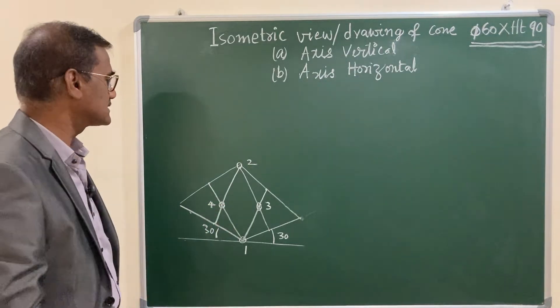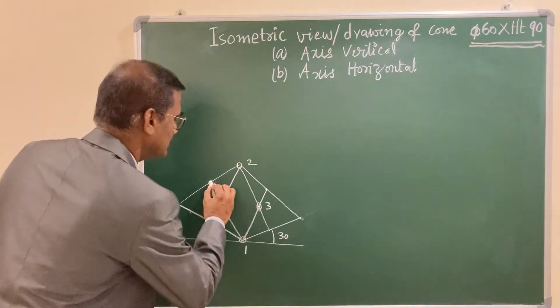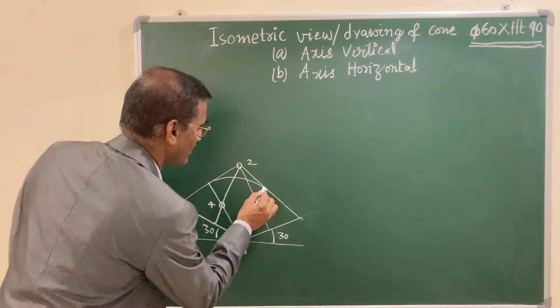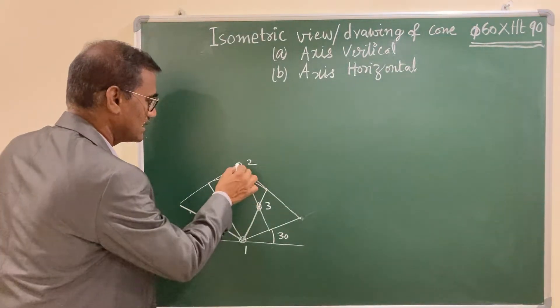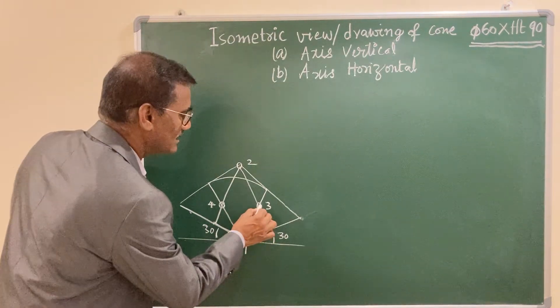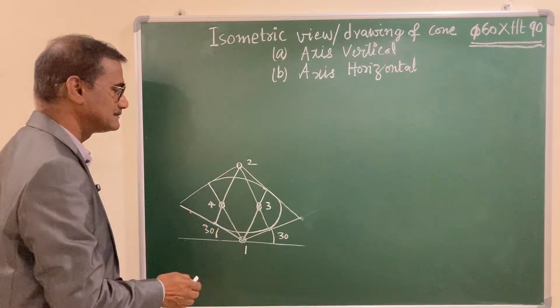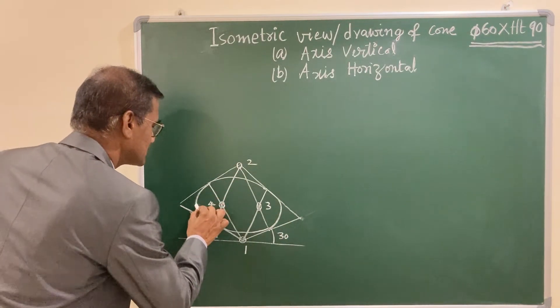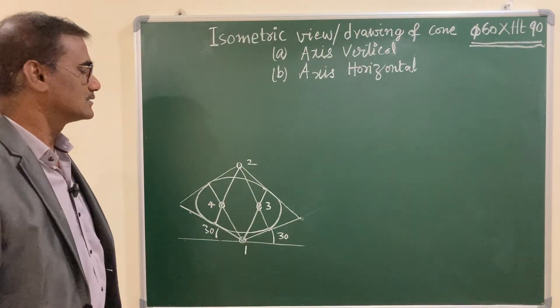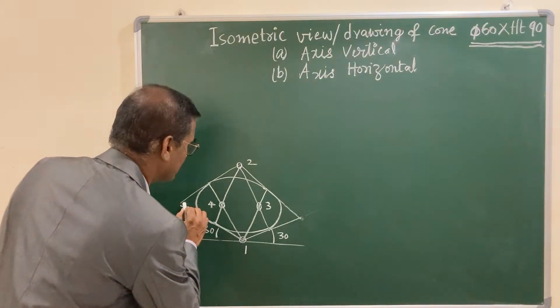Now you got four centers. One as center, the radius is this length—draw a circular arc. Similarly, two as center, join these two with the same radius. And the third point as center, the small length is radius. Similarly, same radius you got that fourth. The base of the cone is completed.